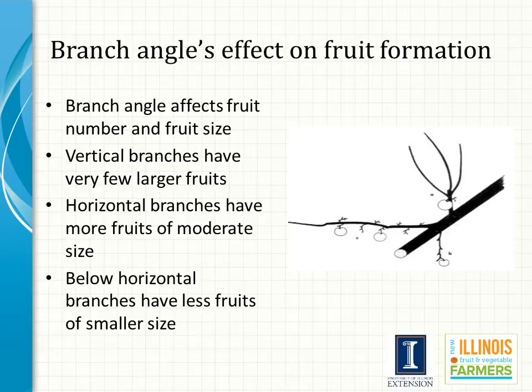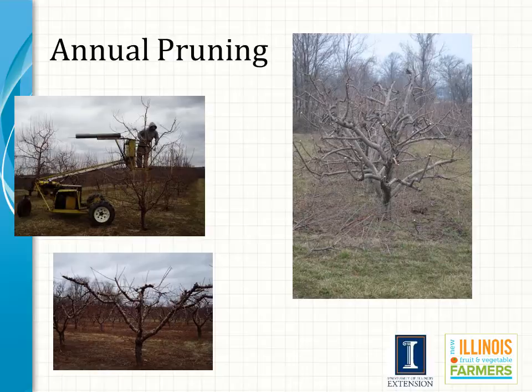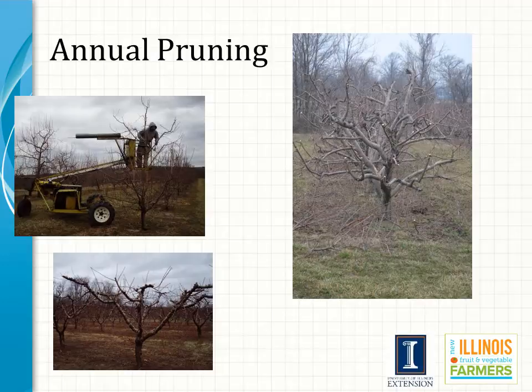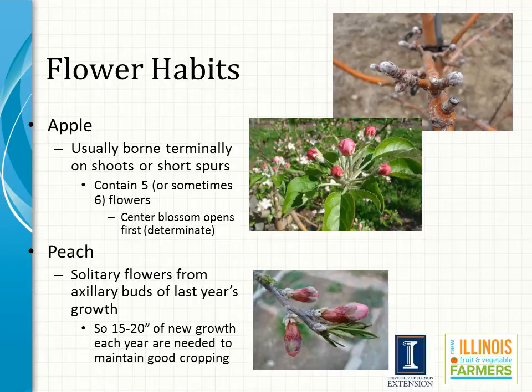An additional benefit of a horizontally trained limb is an increased number of flower buds and fruit, and in most cases will decrease the time to bear. Once fruit trees have been trained to a specific training system, the goal of annual pruning is to maintain that shape, increase light penetration into the canopy, improve fruit color, and increase fruit bud formation for the next year's crop.